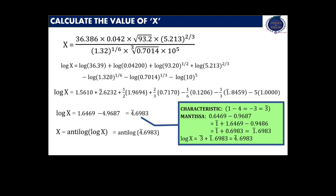Consulting the anti-logarithm table, we get the answer: x is equal to 4.992 into 10 raised to minus 4. I hope you have understood the steps involved in finding the value of x.